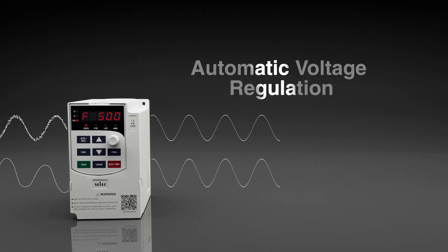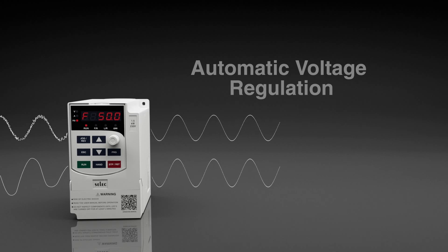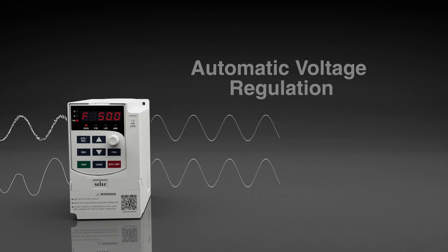Automatic Voltage Regulation: With its automatic voltage regulation feature, the VFD-S ensures a stable output voltage, even in the presence of fluctuations on the grid side, safeguarding your system against potential disruptions caused by voltage variations.